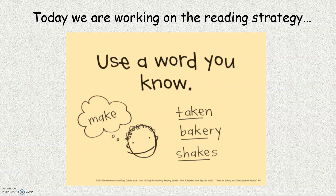Hello, readers. Today we are working on the reading strategy: use a word you know. This is just another strategy we can use when we come to a word that we don't know. Take a look at these words, for example. When I see a big word, I can say, is there a smaller word in there? In the word 'taken,' I see the smaller word 'take.' In the word 'bakery,' I see the word 'bake.' And in the word 'shakes,' I see the word 'shake.' I can break up big words into smaller words that I know.